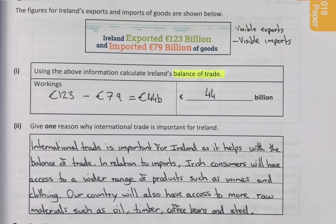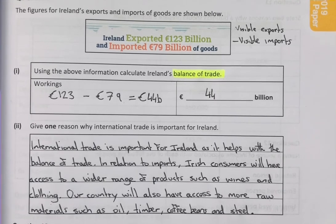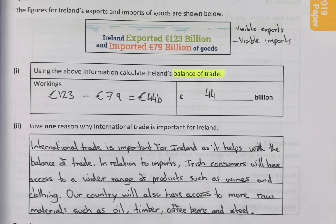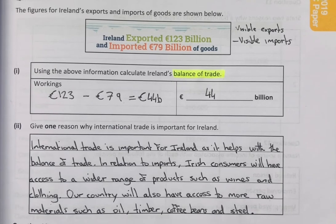International trade is important for Ireland as it helps with the balance of trade. In relation to imports, Irish consumers will have access to a wider range of products such as wines and clothing. Our country will also have access to more raw materials such as oil, timber, coffee beans, and steel.